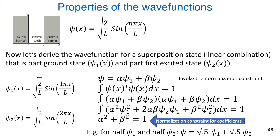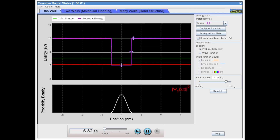To look at one particular example: if we want to prepare a state that is half ground state and half first excited state, the coefficients must be the square root of 0.5 times psi-one plus the square root of 0.5 times psi-two. That gives us the required half-and-half mixture. To illustrate superposition states further, let's return to the PhET simulator at PHET.colorado.edu, which gives free access to these simulations.